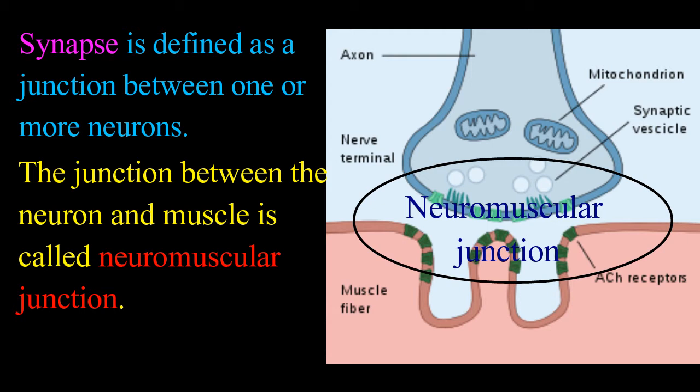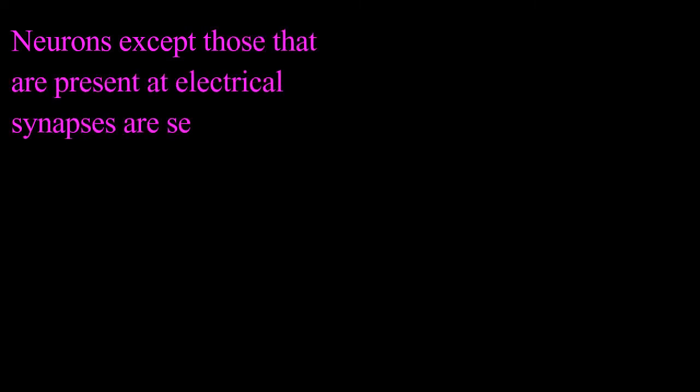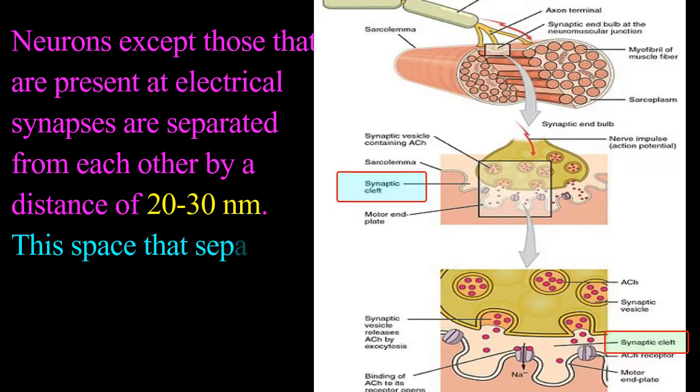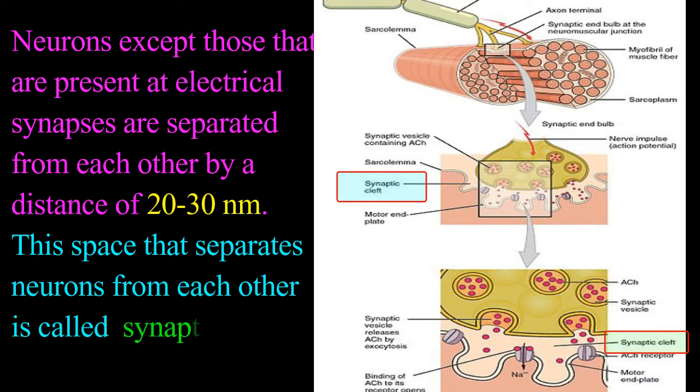Neurons, except those that are present at electrical synapses, are separated from each other by a distance of 20 to 30 nanometers. The space that separates neurons from each other is called the synaptic cleft.